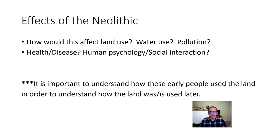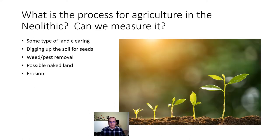It's important to really try and understand what these early people were doing, because what they did to the land back then could have affected the way we are using the land now. In terms of the process for agriculture — can we measure it? Like, how do we know that people were actually planting crops? There are lots of ways we can look at this.